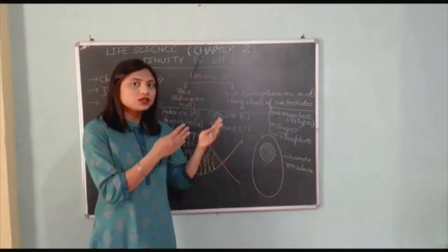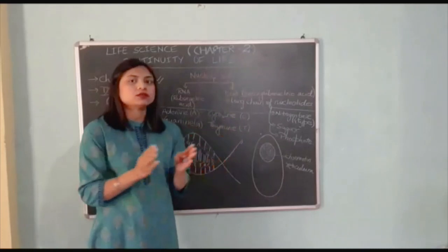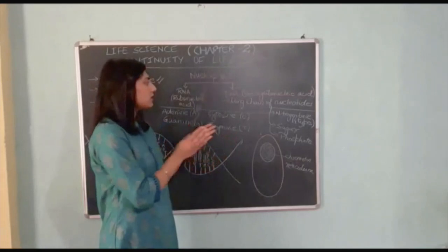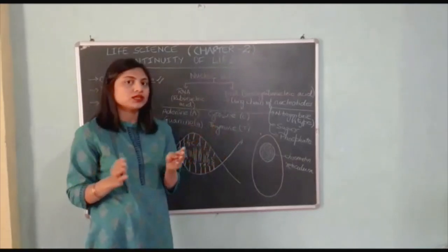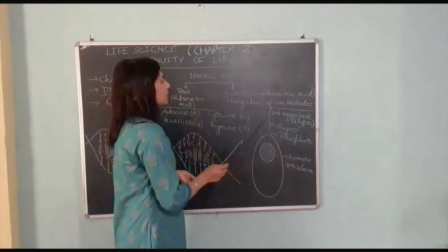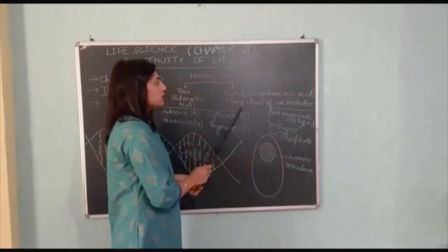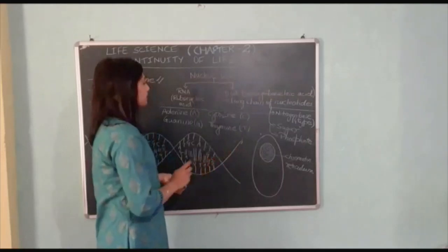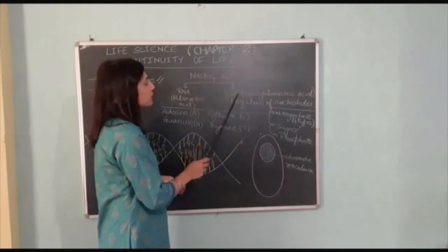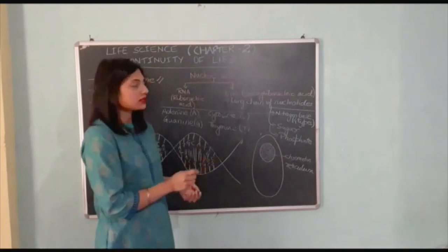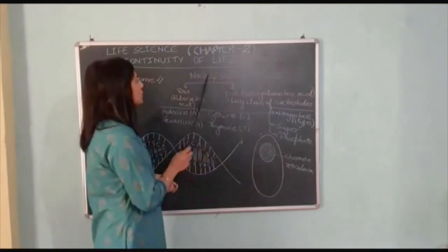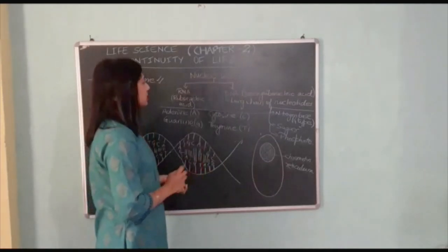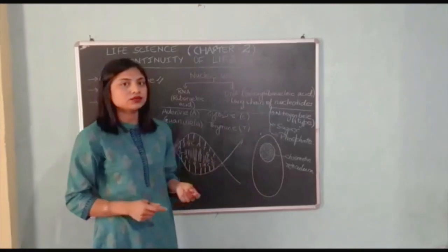It is a long chain of nucleotides - polynucleotides. Many nucleotides together form deoxyribonucleic acid. This deoxyribonucleic acid comes under the class nucleic acid. Nucleic acids are usually of two types: RNA and DNA - ribonucleic acid and deoxyribonucleic acid.